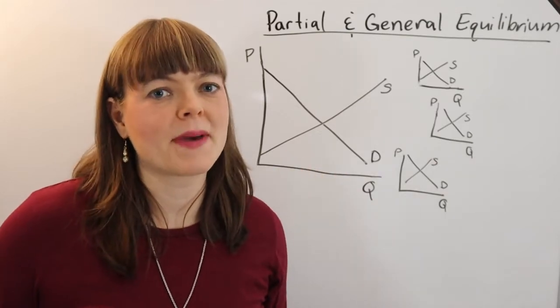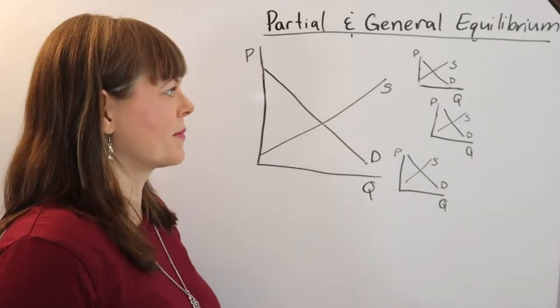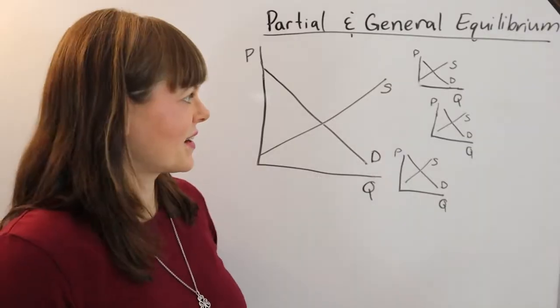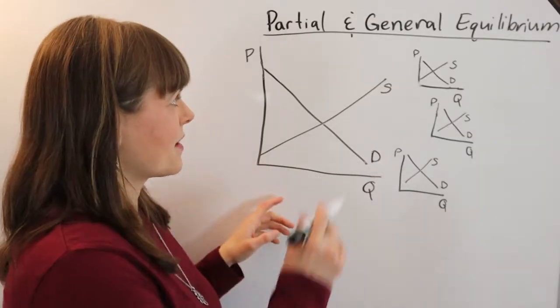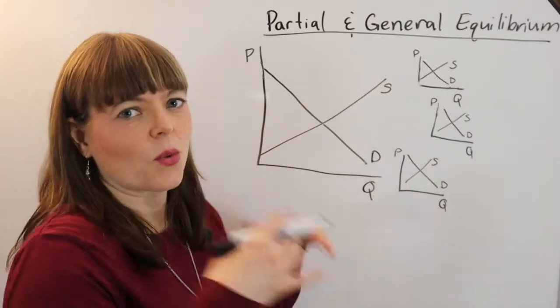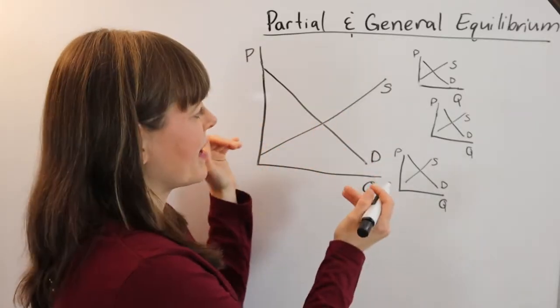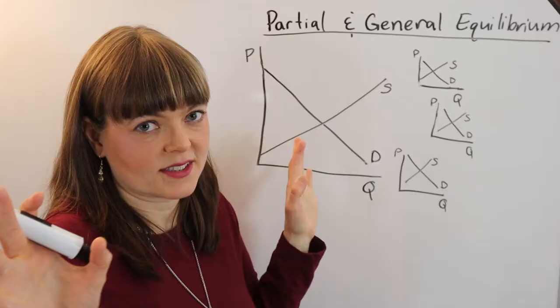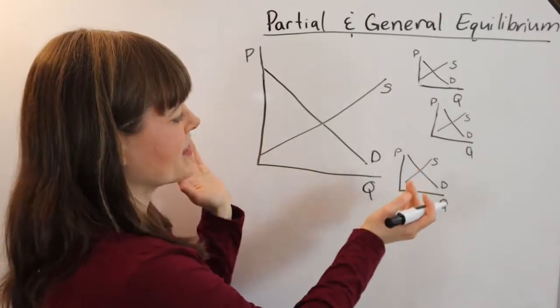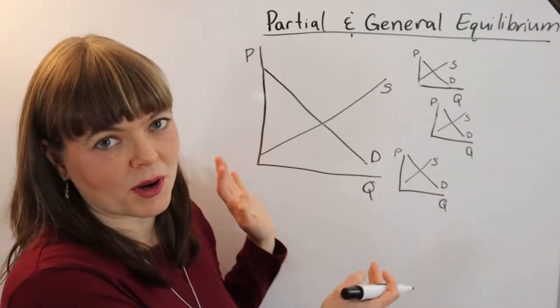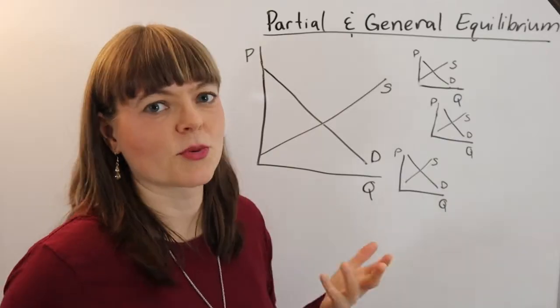What is partial equilibrium and general equilibrium in economics? The basic idea is that partial equilibrium is what happens to one particular market when the supply and demand curves shift once. Partial equilibrium is the normal econ 101 supply and demand curve situation.